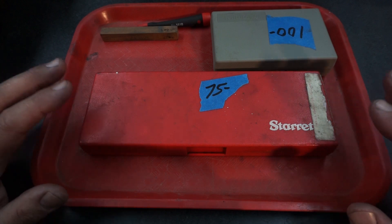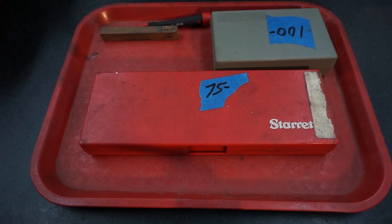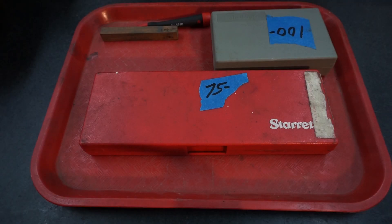We got some Starrett dial calipers and also got a Mitutoyo test indicator. The guy was asking $175 and I offered him $100 for both pieces and he took it, so I got two pretty nice tools.